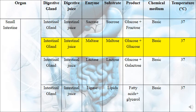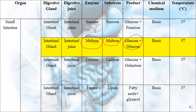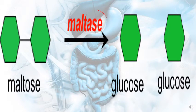The intestinal gland also secretes intestinal juice containing the enzyme maltase. Maltase works on maltose to give two glucose molecules. You know that maltose is digested at the level of the small intestine. The medium is basic with pH greater than 7, and the temperature is 37 degrees Celsius — the optimum temperature for enzymes. So the reaction is: maltose + maltase → glucose + glucose.